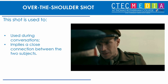An over the shoulder shot is literally what it says — a shot from over someone's shoulder. You can see these two people are clearly in conversation: we're looking over the shoulder of one character and can see the face of another. Over the shoulder shots are used especially in conversations because they suggest the two people are close together. If one person were out of frame, it would imply distance, but seeing both in the same shot tells us they're really close to each other.